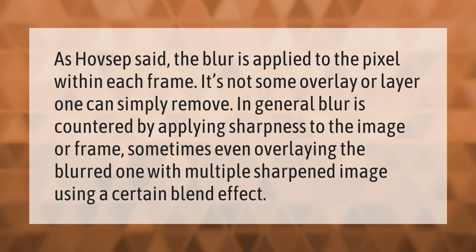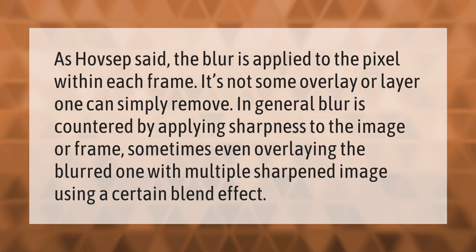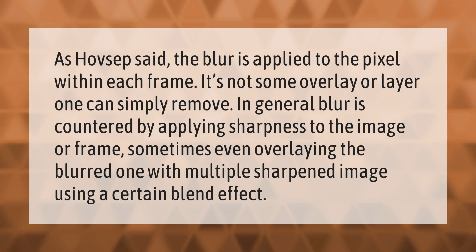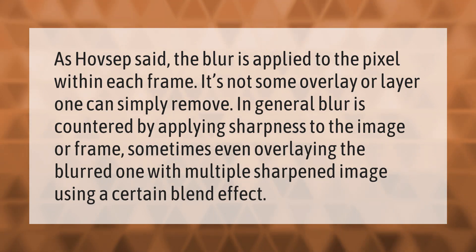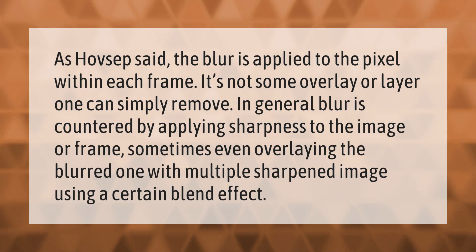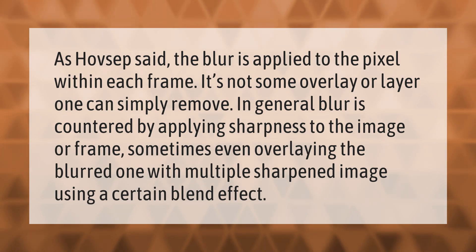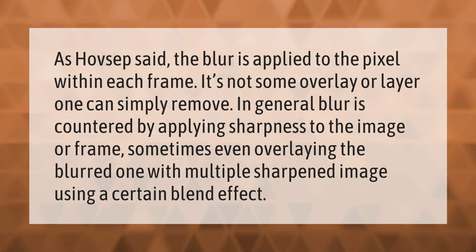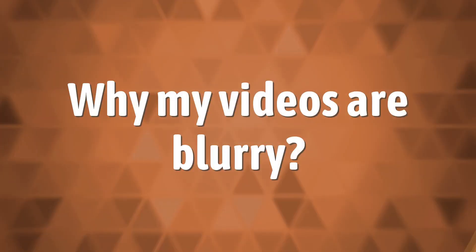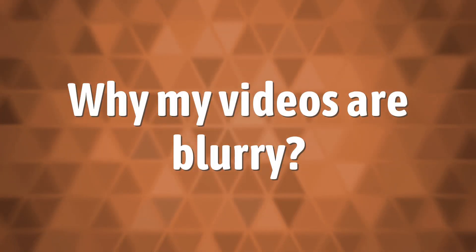The blur is applied to the pixels within each frame — it's not some overlay or layer one can simply remove. In general, blur is countered by applying sharpness to the image or frame, sometimes by overlaying the blurred image with multiple sharpened images using a certain blend effect.